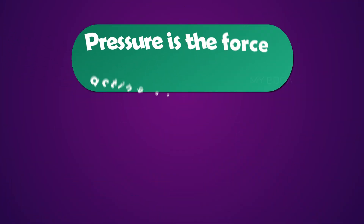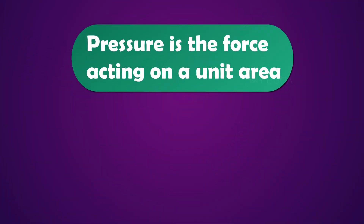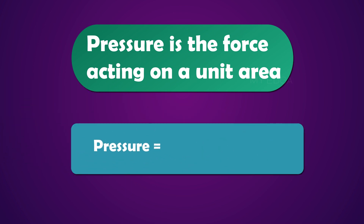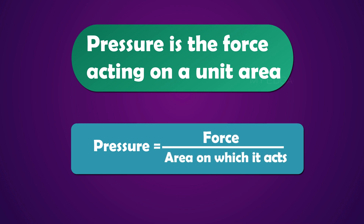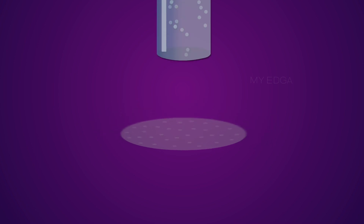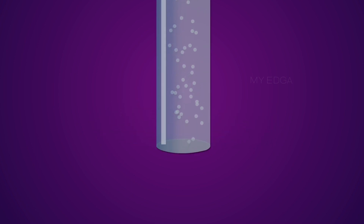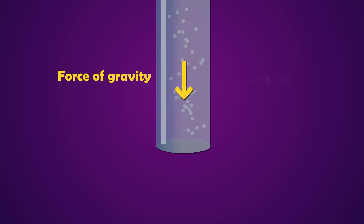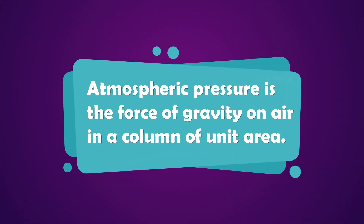We have already learned that pressure is the force acting on a unit area — that is, pressure equals force divided by the area on which it acts. If we imagine a unit area with a long cylinder standing on it filled with air, then the force of gravity on the air in this cylinder is the atmospheric pressure. So we can define atmospheric pressure as the force of gravity on air in a column of unit area.